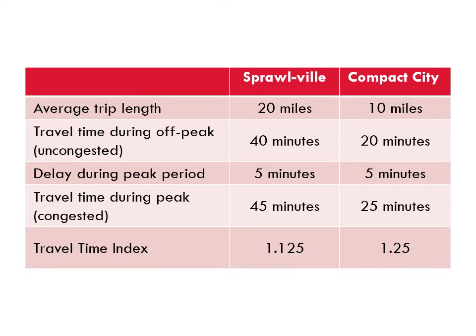Now let's imagine that drivers in each city encounter about five minutes of delay during the peak period. That means drivers in Sprawlville will spend 45 minutes traveling during the peak, and drivers in the compact city will spend 25 minutes. To find out which area is more congested, we calculate the TTI: 45 divided by 40 equals 1.125 for Sprawlville, and 25 divided by 20 equals 1.25 for the compact city.